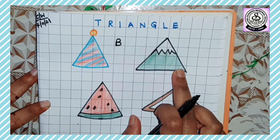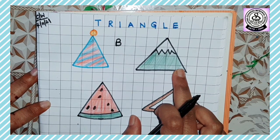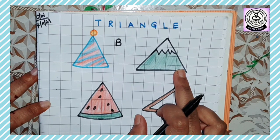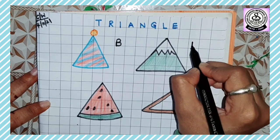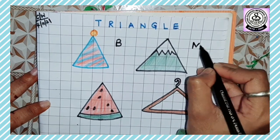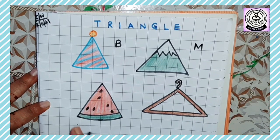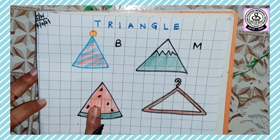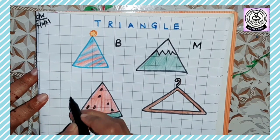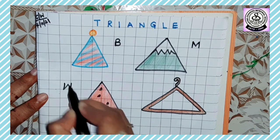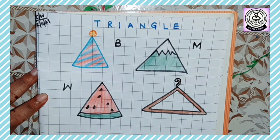What is the second object that we have drawn? Yes, mountain. And the phonics sound? Very good! Ma, ma, mountain. Our third object is watermelon. And what is the phonics sound of watermelon? Very good! W, w, watermelon.